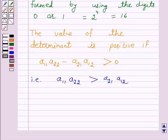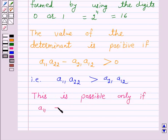Since each element of the given determinant is either 0 or 1, this is possible only if a11 is equal